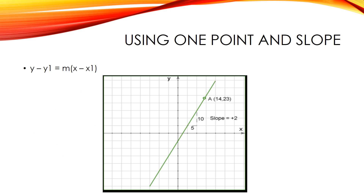Using one point and the slope: sometimes on the GMAT, you will be given a point on the line and its slope, and from this information, you will need to find the equation or check if this line goes through another point. You can think of the slope as the direction of the line. Once you know that a line goes through a certain point and which direction it is pointing, you have defined one unique line. For example, a line passes through point A at (14, 23) with a slope of +2, meaning it goes 2 up for every 1 across.